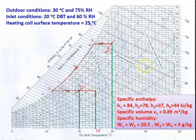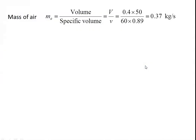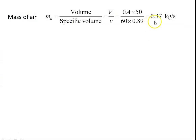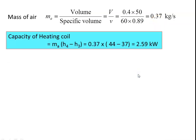Calculate the mass flow rate of air: volume divided by specific volume = (0.4 × 50) / (60 × 0.89) = 0.37 kg/s. Capacity of heating coil = ma × (h4 − h3). The air is heated from initial condition h3 to final condition h4.